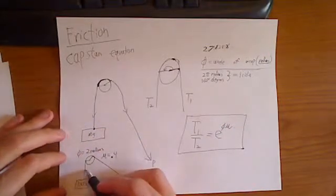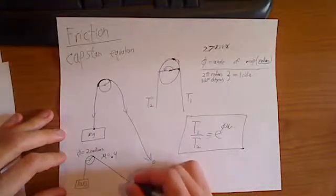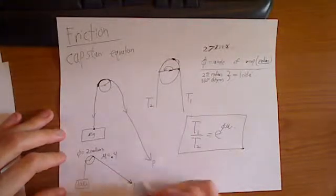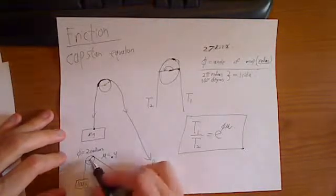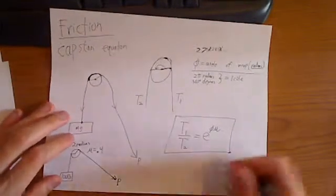So, we know that the tension in this rope is 100 pounds. If you want to pull it up, you have to pull on P with something more than 100 pounds to overcome this friction. So, let's find out what that is.